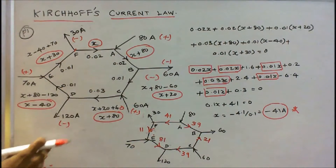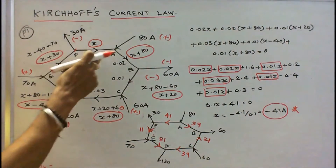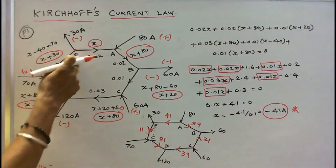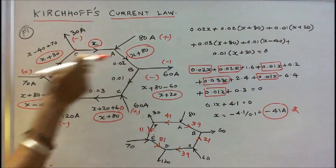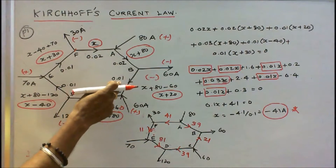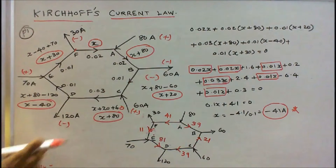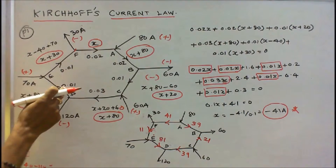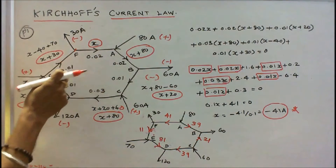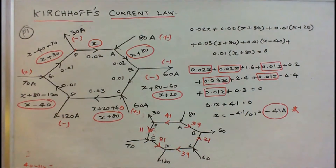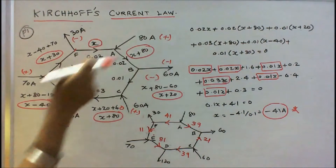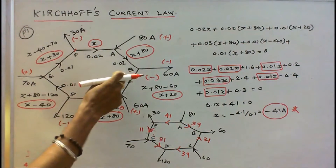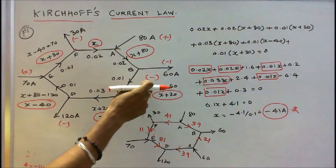Problem number one. In this problem, there are six junctions: A, B, C, D, E, F. The resistance between A and B is 0.02 ohms, B and C is 0.01 ohms, C and D is 0.03 ohms, D and E is 0.01 ohms, E and F is 0.01 ohms. At point A, the current towards the junction is 80A, that is positive. At point B, the current leaving the junction is 60A, that is why a minus sign is used.